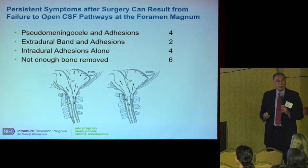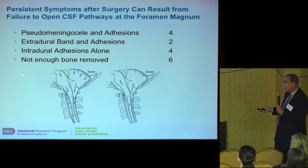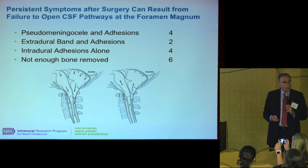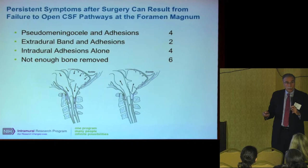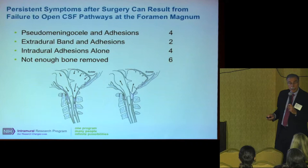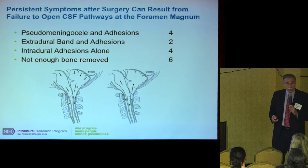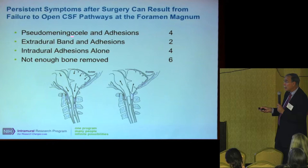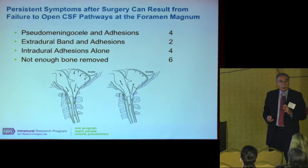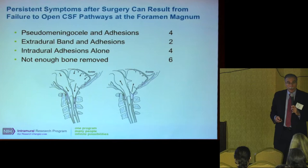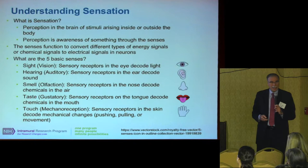Just because you have surgery doesn't mean symptoms will go away if you don't accomplish the goal. If flow isn't improved after surgery, or if scarring develops, you could be worse off. If symptoms aren't better post-surgery, you should investigate why: adhesions, bands that weren't cut, or not enough bone removed are the main causes. A second surgery can often correct what wasn't accomplished with the first.